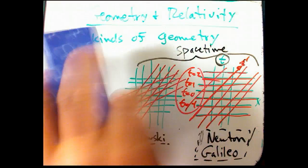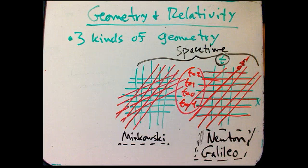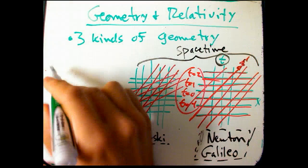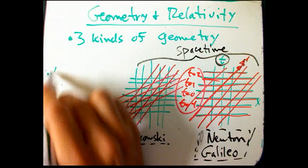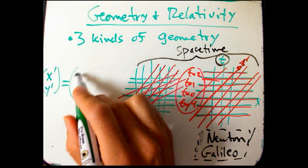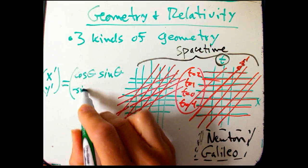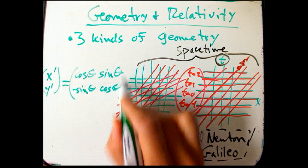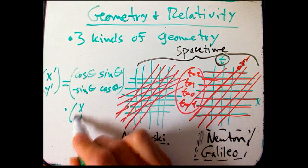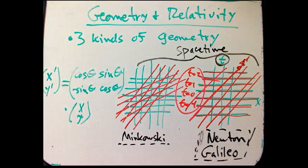We can compare the equations as well if we want to. We know the rotation equations here. The matrix, so we have x prime, y prime, equals cos theta, sin theta, minus sin theta, cos theta, times xy. And so there's the transformation there.